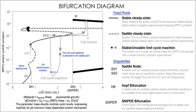A model of a biological system is converted into a system of equations, although the word model is often used synonymously with the system of corresponding equations. The solution of the equations, by either analytical or numerical means, describes how the biological system behaves either over time or at equilibrium. There are many different types of equations and the type of behavior that can occur is dependent on both the model and the equations used. The model often makes assumptions about the system, and the equations may also make assumptions about the nature of what may occur.